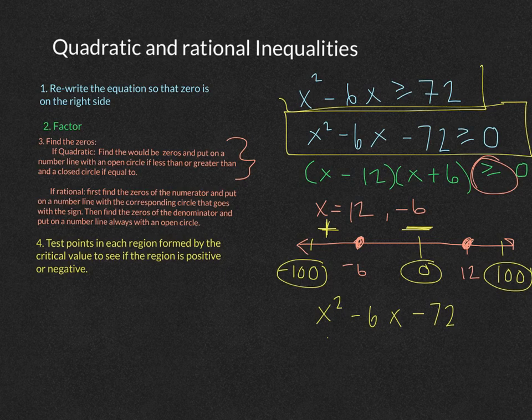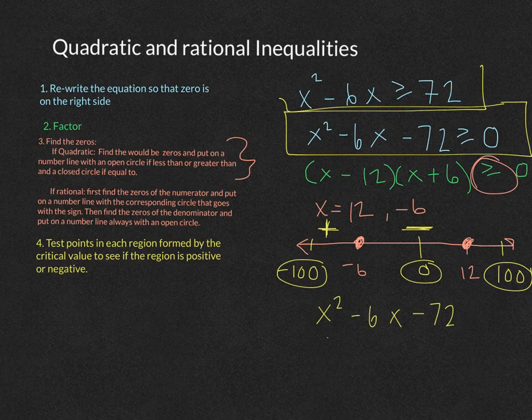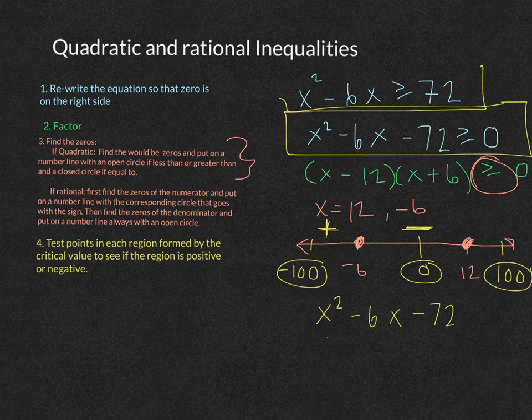And then if we plug 100 in, 100 squared, that's 10,000, minus 6 times 100 is 10,000 minus 600, still positive, minus 72. So that's a positive number.